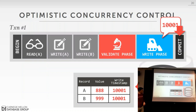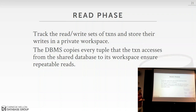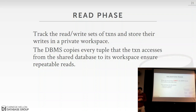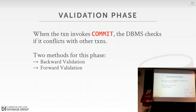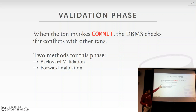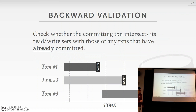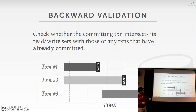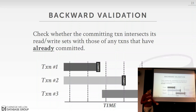So to summarize OCC: read phase — all reads and writes target the private workspace; validate phase — check for conflicts against other committed or running transactions; write phase — if validation passes, apply all updates from the private workspace to the shared database, receive the timestamp, and update write timestamps. Then commit and discard the private workspace. There are two ways to do the validation: backward validation checks whether your read/write set overlaps with any already-committed transaction from the past; forward validation checks against currently-running transactions.